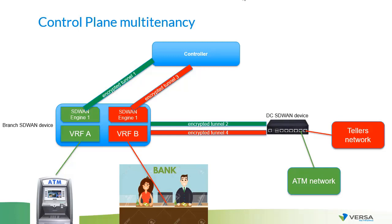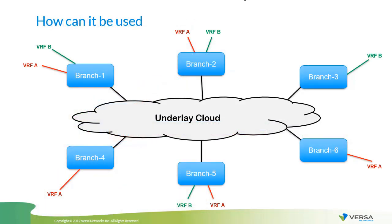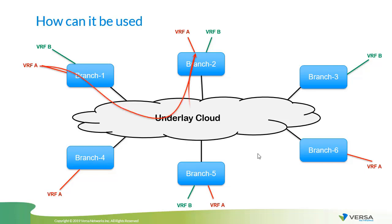Let's see an example of what can be achieved with control plane multi-tenancy. You can create independent topologies for each tenant. Imagine two tenants: tenant one with VRF A and tenant two with VRF B. Some devices have only one tenant's network; others have both. With control plane multi-tenancy, you can create independent topologies — for example, users of VRF A communicating with branch five can use a hub-and-spoke topology where traffic flows through a hub first. Meanwhile, tenant two with VRF B can use a full mesh topology where traffic flows directly.